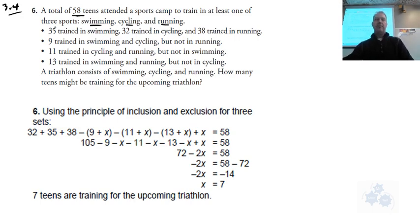It says there's a total of 58 teens attended a sports camp to train in at least one of three sports: swimming, cycling, and running. 35 trained in swimming, 32 trained in cycling, and 38 trained in running.